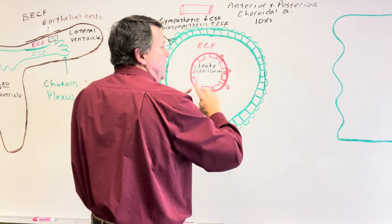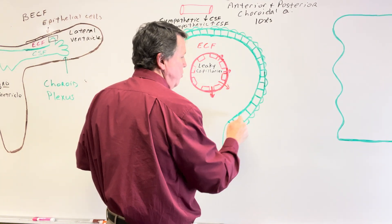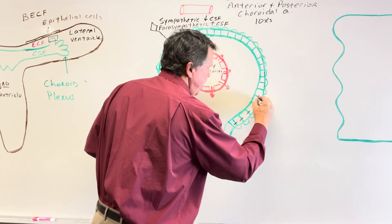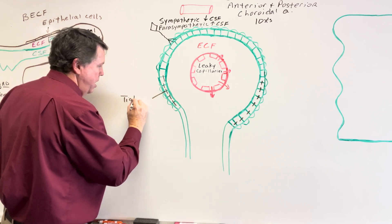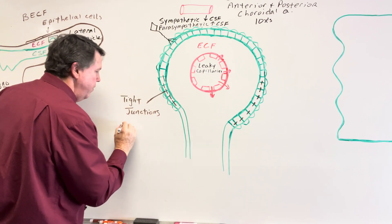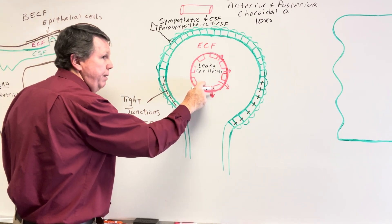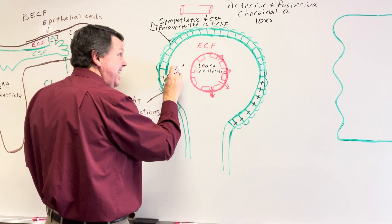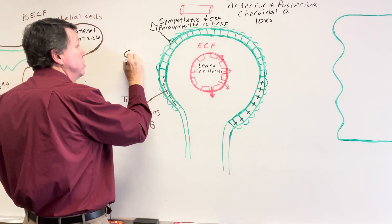What we don't want is this extracellular fluid going out into our cerebrospinal fluid. So on these modified ependymal cells — the choroidal epithelial cells — we are going to have tight junctions that go all the way around. This acts as our barrier, and these tight junctions help form what we call the blood-cerebrospinal fluid barrier, keeping fluid from the capillary from mixing with the CSF.